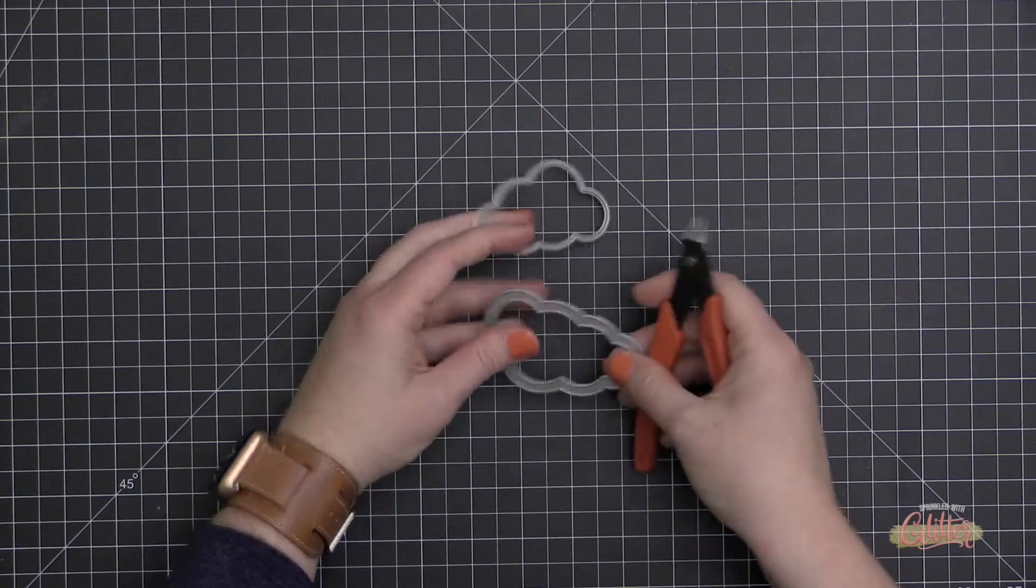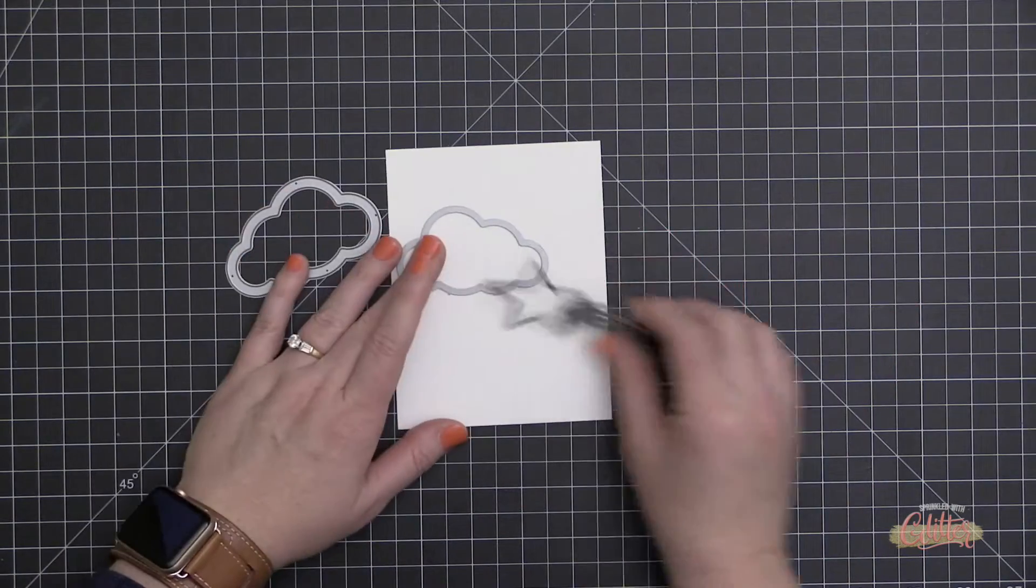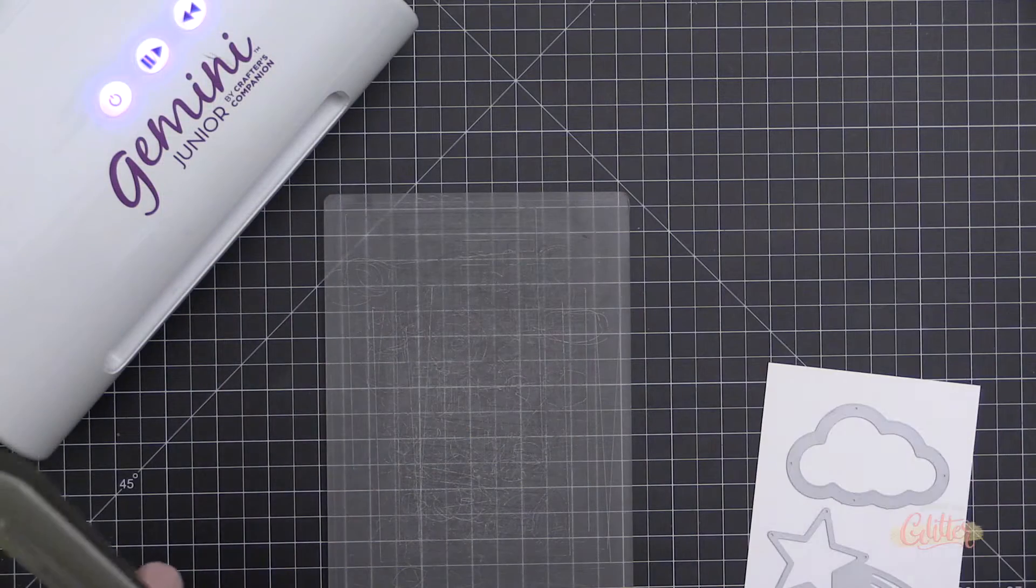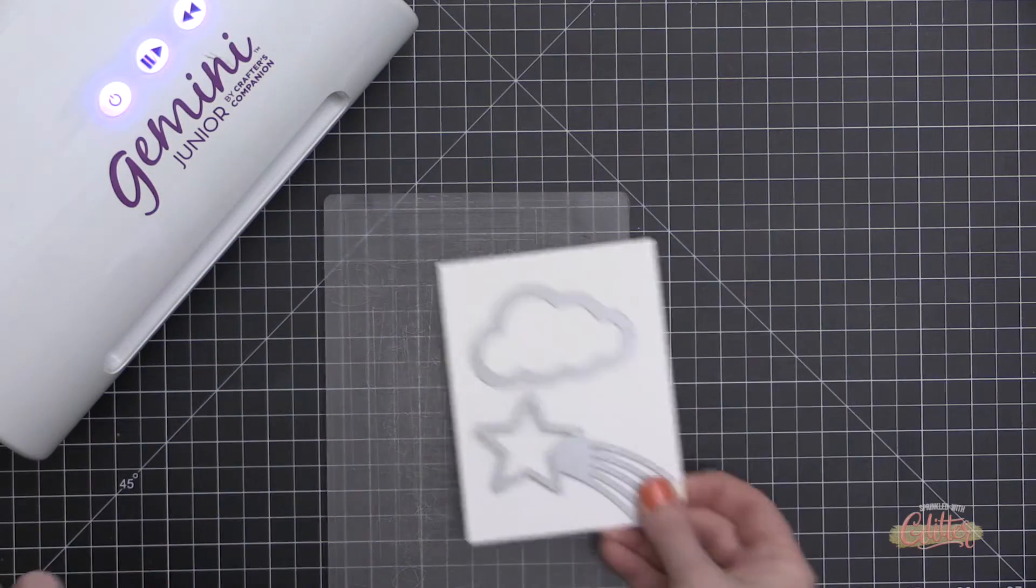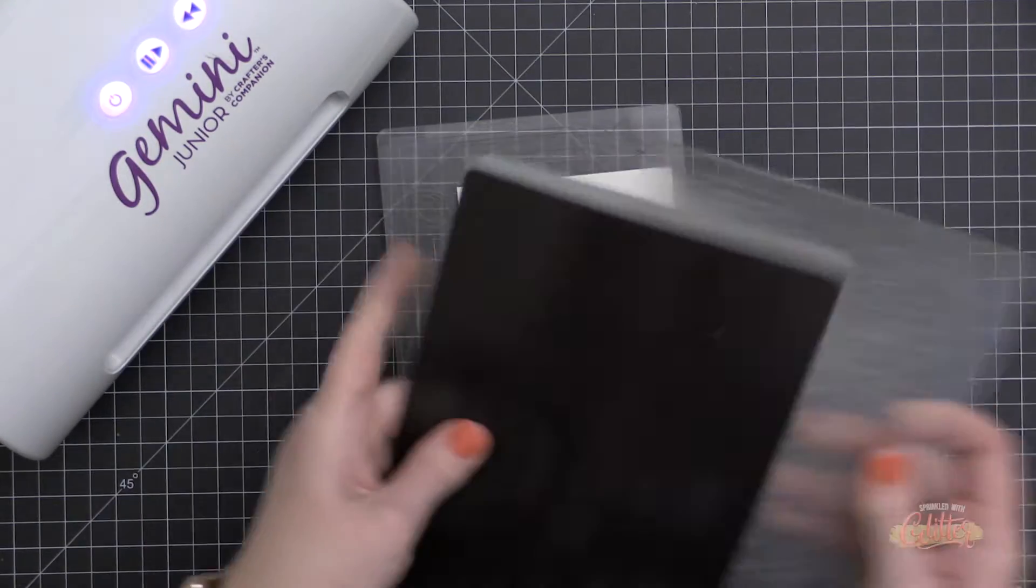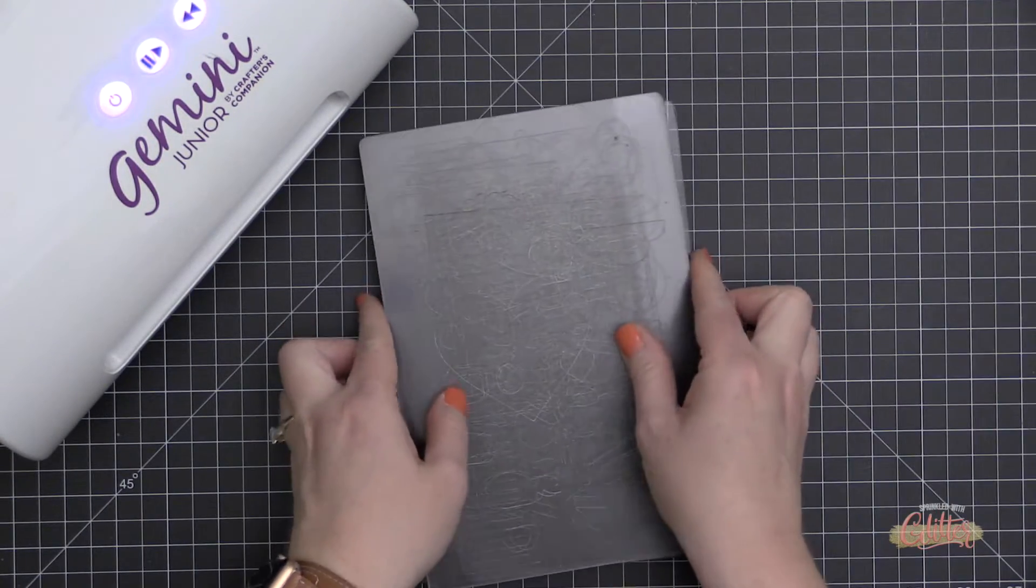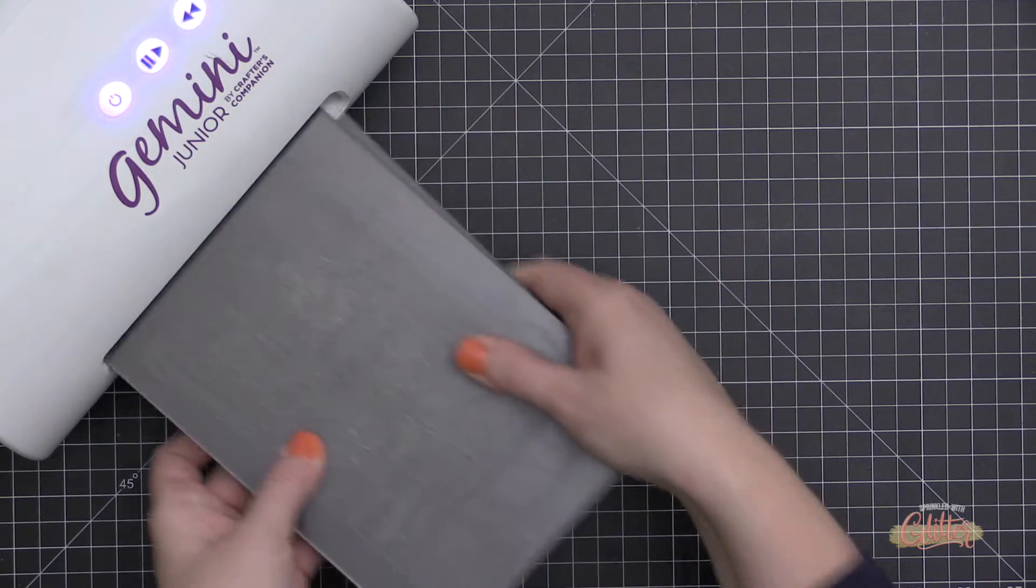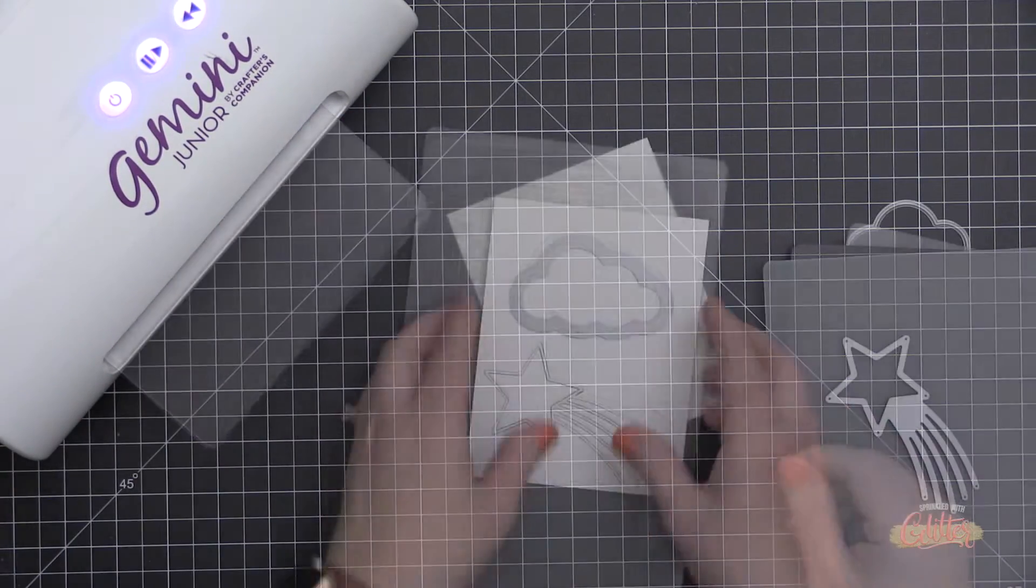I'm going to start out by clipping my dies apart using my die snips, and I'm going to use my dies to kind of plan things out. To really get a sense of how big these die cuts are going to be, I'm going to use some scrap white cardstock and run them through my die cut machine to help me plan out my card layout.